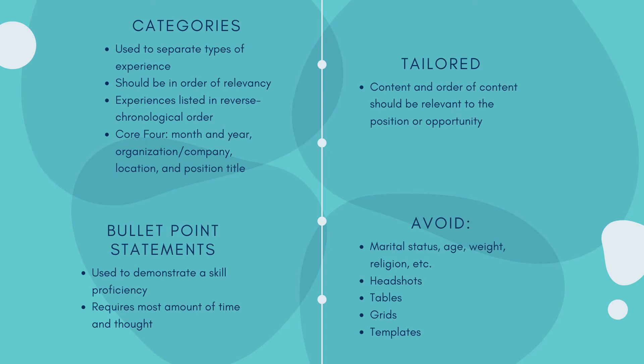When setting up a resume, there's a lot of liberty one can use when determining what categories to include. Categories are used to separate types of experience, and they should be listed in order of relevancy. Within each one of these categories, those experiences should be listed in reverse chronological order — starting with things that are present tense and then working backwards in time.